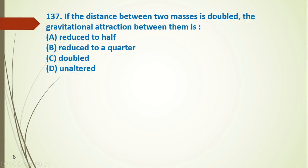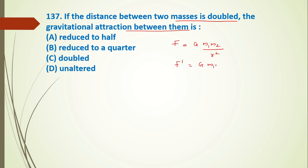Question 137: if the distance between two masses is doubled, the gravitational attraction between them changes. By Newton's law of gravitation, F = G·m₁·m₂/r². If distance r is doubled, the force becomes F/4 — reduced to a quarter. The answer is B.